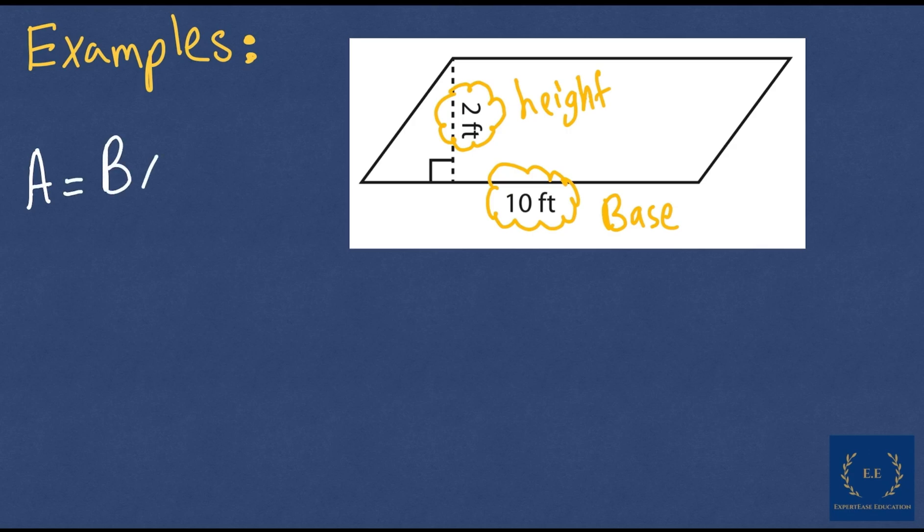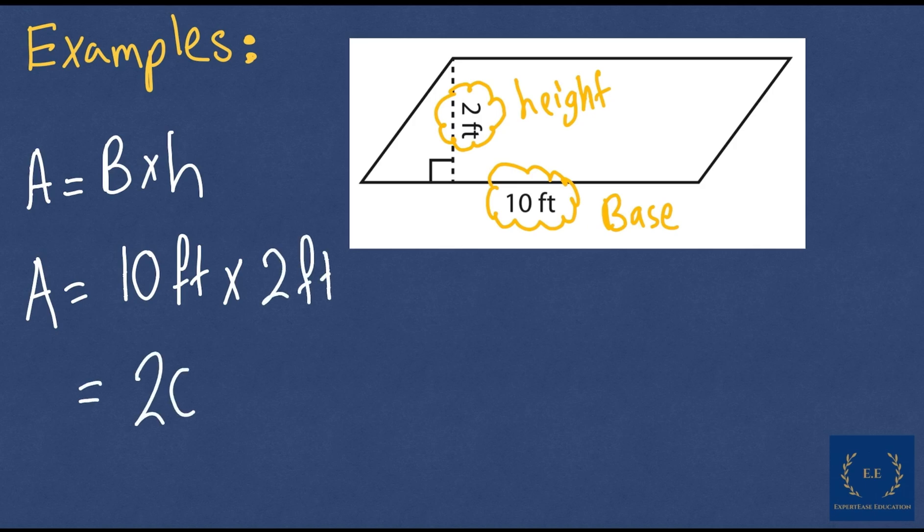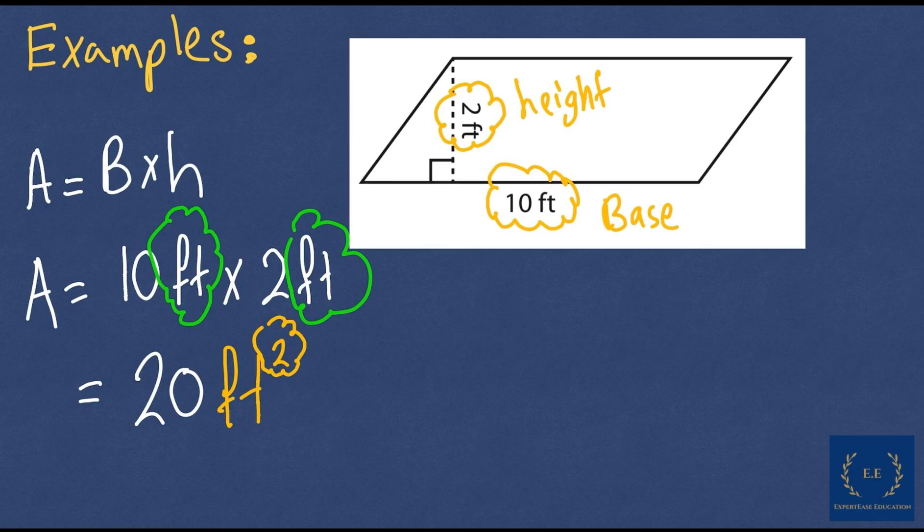Let's write the formula: Area equals base multiplied by the height. Now replace the numbers: A equals the base of 10 feet multiplied by the height of 2 feet, which equals 20. But 20 what? The area is always measured in units squared. We have feet here, so the final unit would be 20 feet squared. This is very important - whenever we say squared it means we are measuring area.